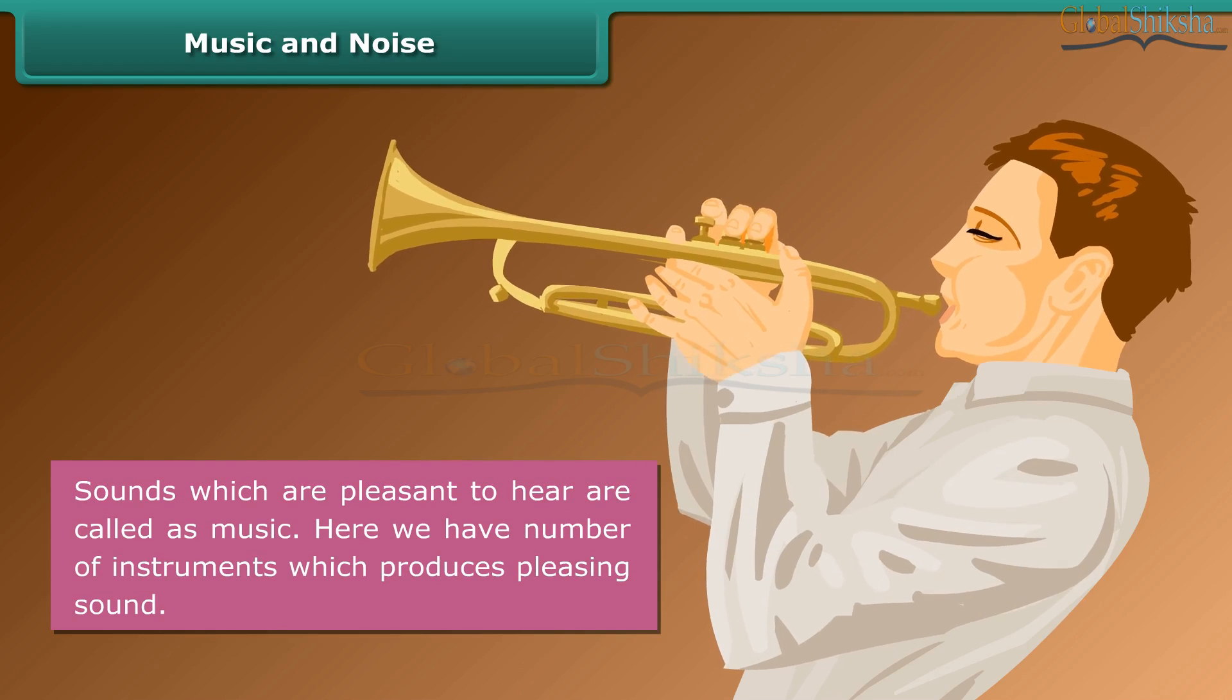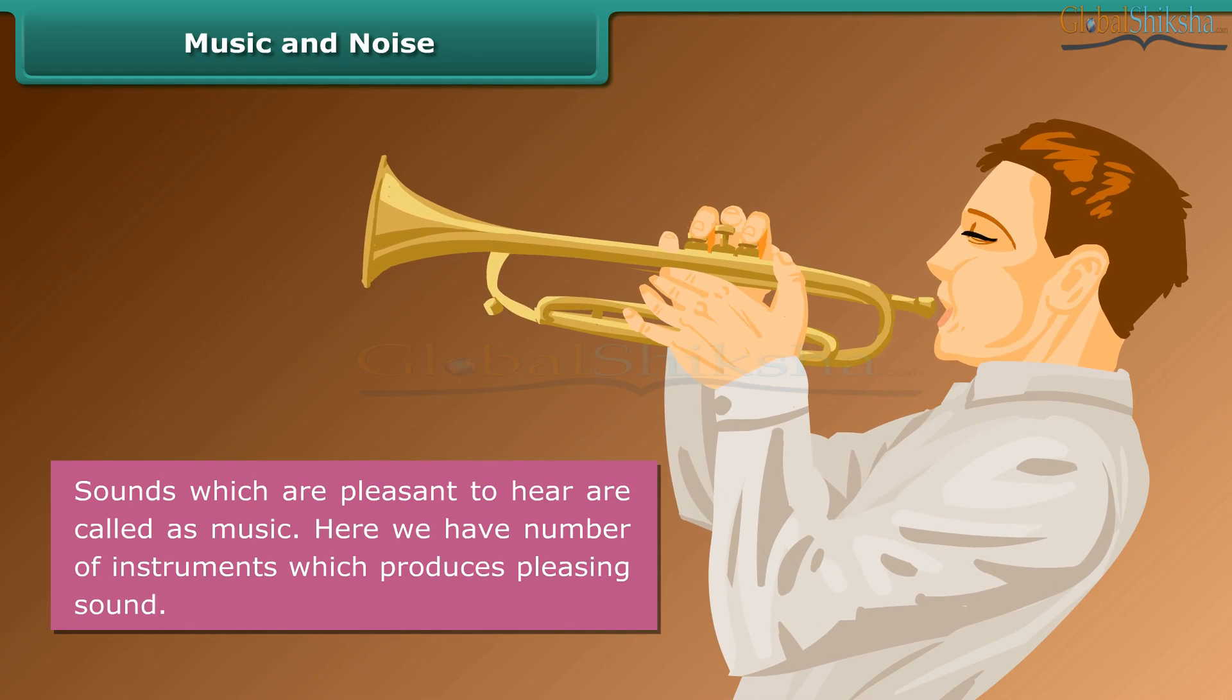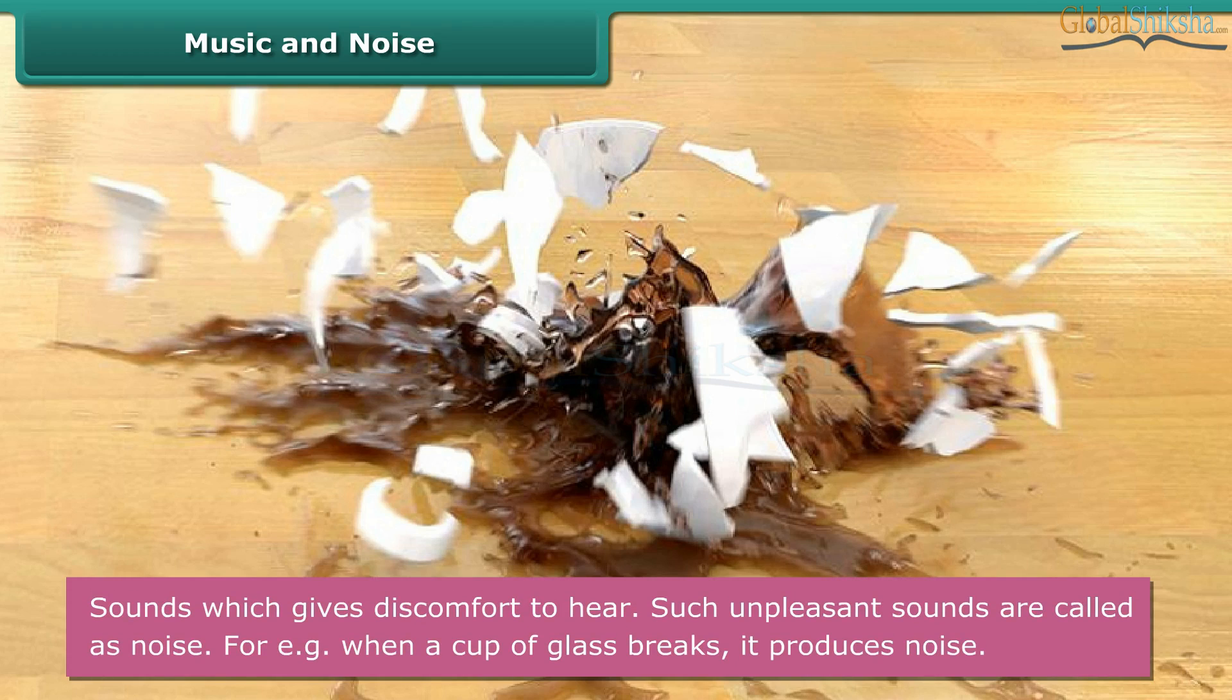Music and noise. Sounds which are pleasant to hear are called as music. Here we have number of instruments which produces pleasing sound. Noise: Sounds which gives discomfort to hear. Such unpleasant sounds are called as noise. For example, when a cup of glass breaks, it produces noise.